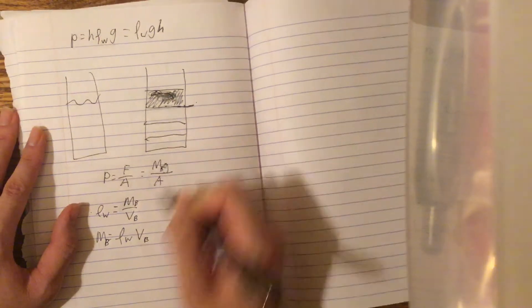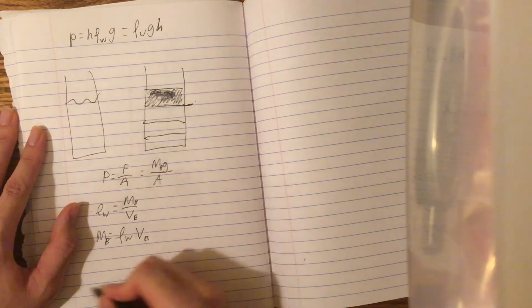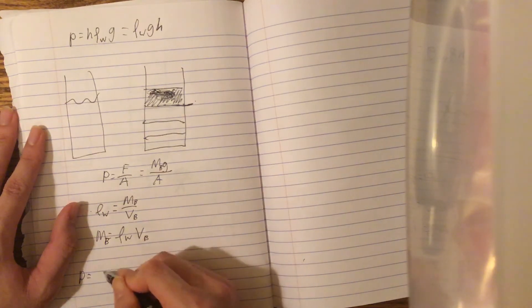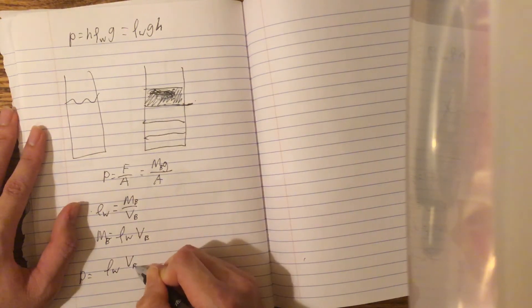So b stands for block. So we can plug in mass back into here. So we get that pressure equals density of water times volume of the block over area of the block.